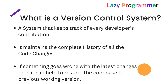Git is also a kind of version control system. Consider a scenario where you are working on a feature and you have made some changes, but after your changes are merged in the main code there is some issue occurring in the application. In that case, the version control system will help you restore the codebase to the previous working version, because it maintains the history of all code changes. There are various version control systems available but the most widely used one is Git.